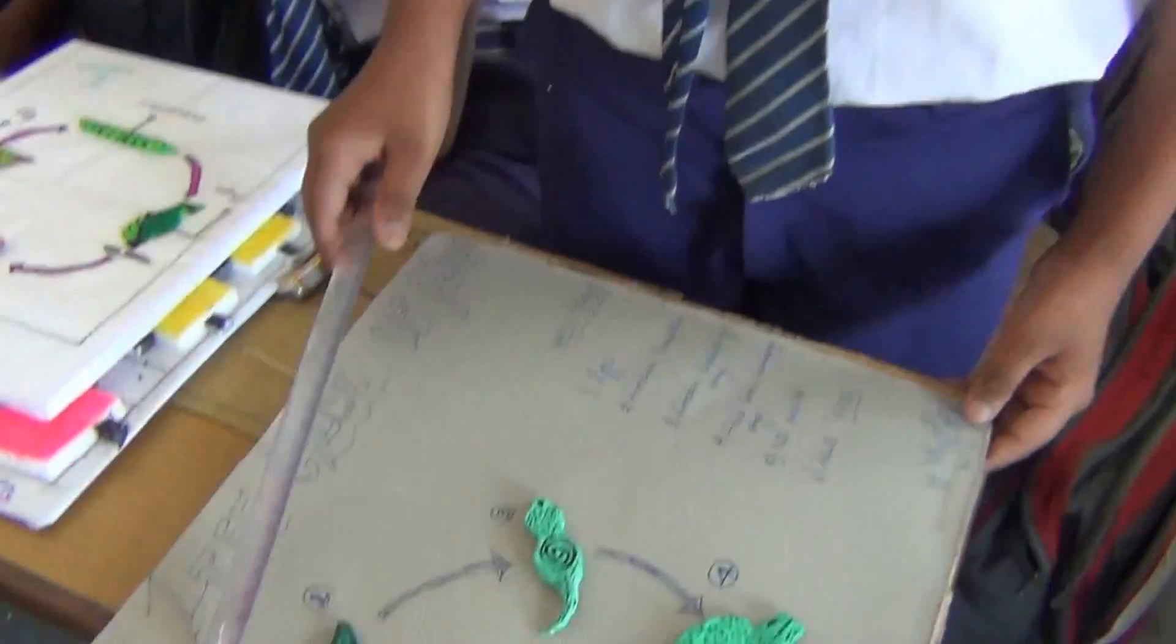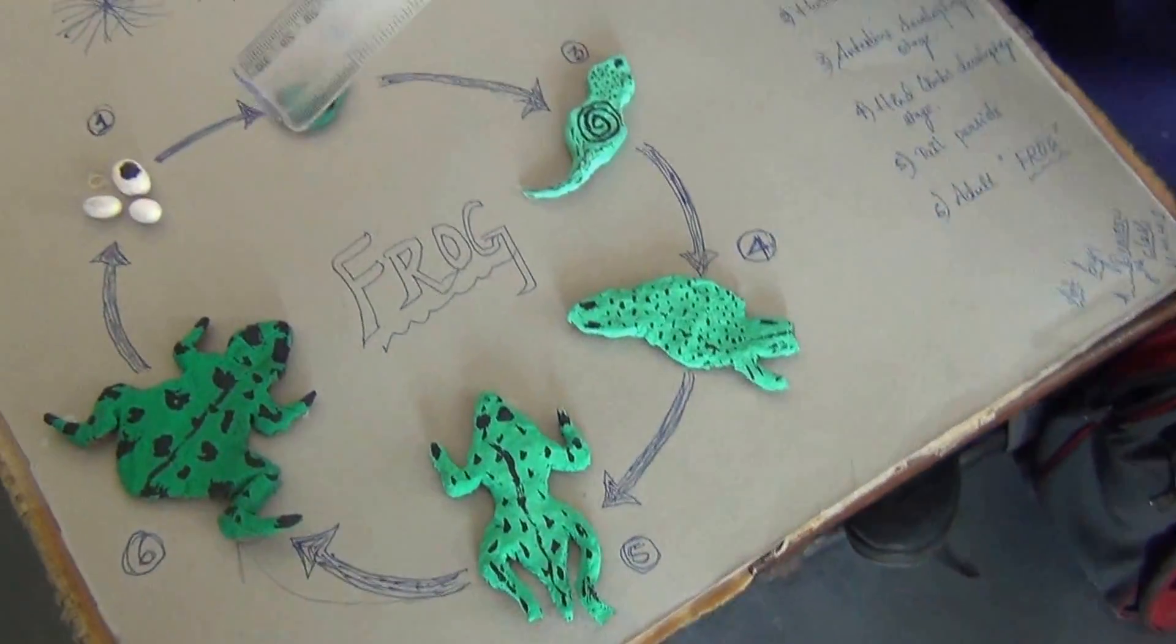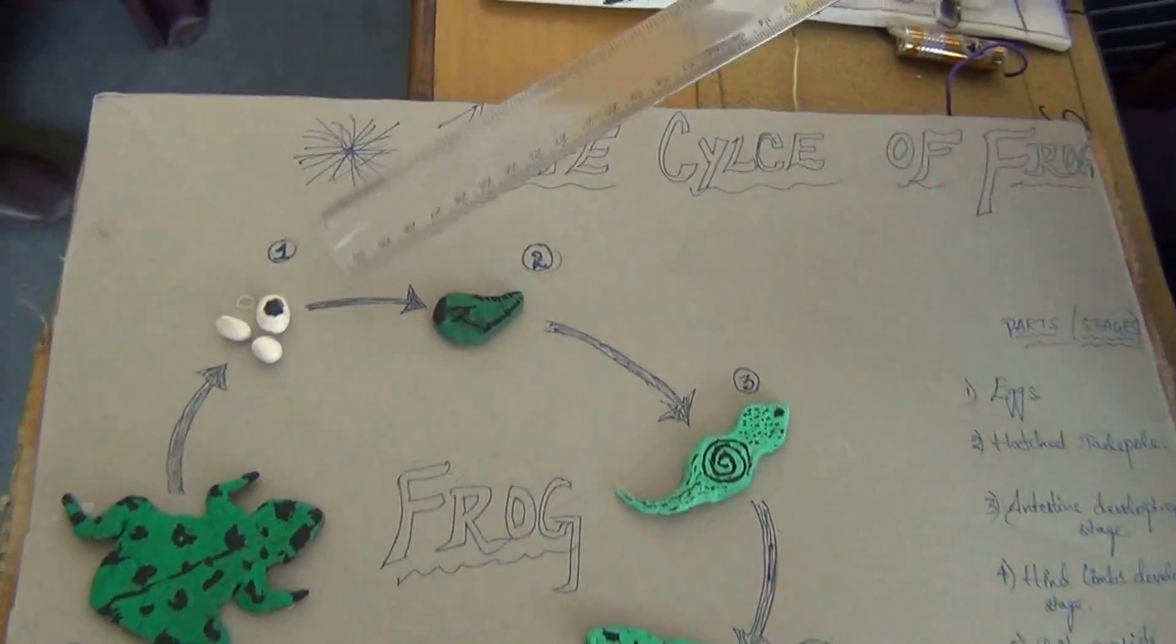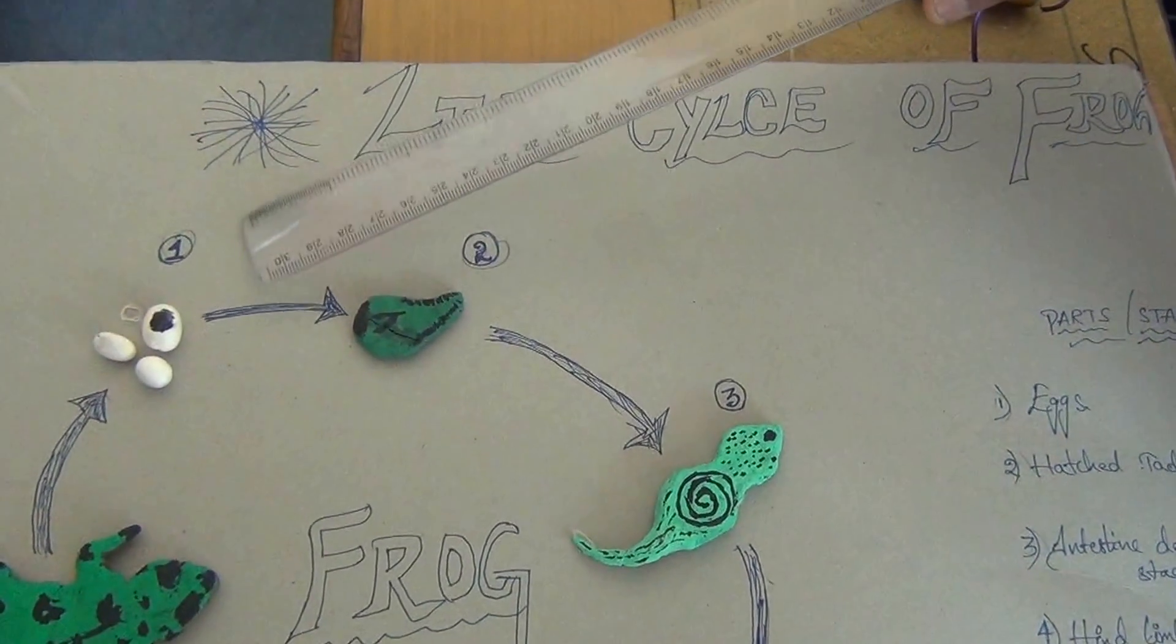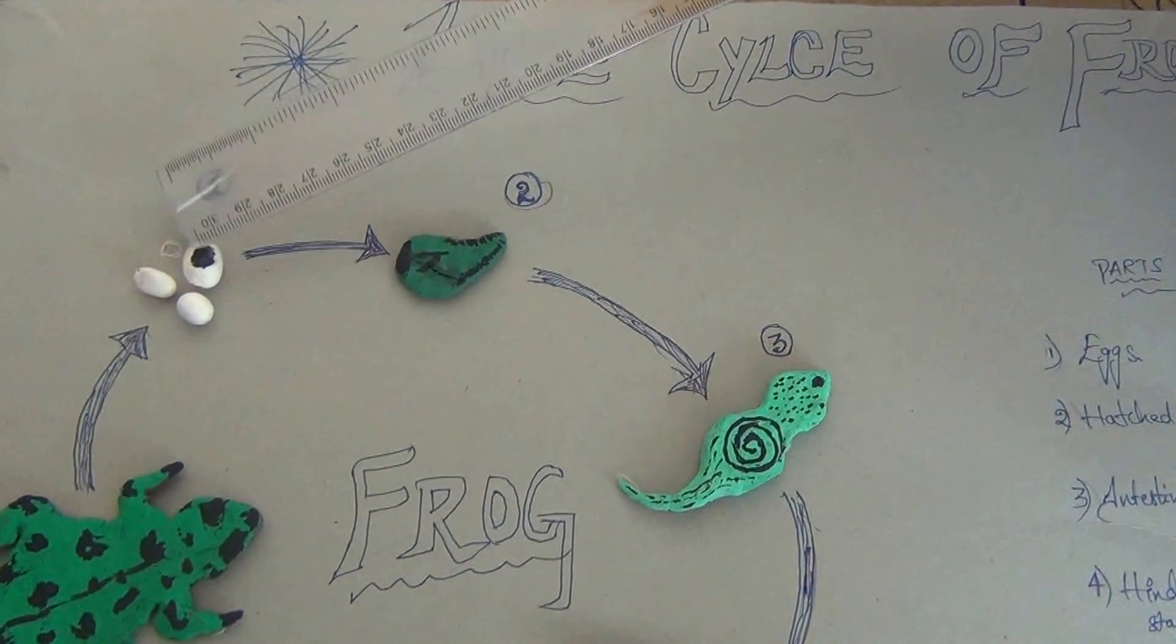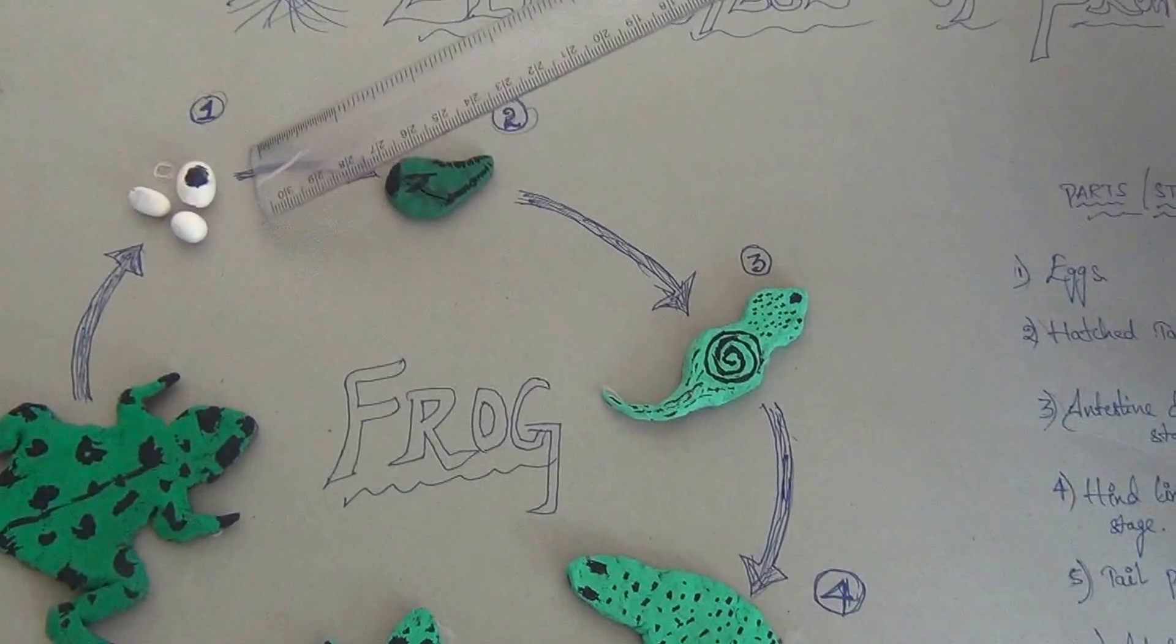This Life Cycle of Frog, first male or female represents the eggs in ponds. They can be identified by black spots. Here are the eggs.